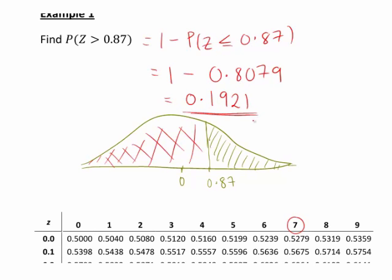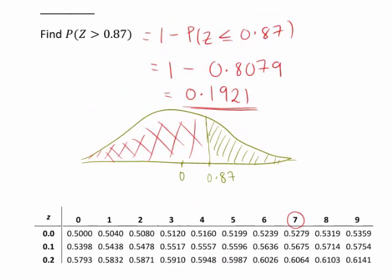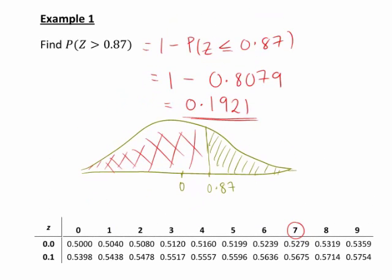That's the general way we must proceed whenever you want the probability of z greater than a certain value using a cumulative normal distribution table. It will be 1 minus the probability that you get from the table.